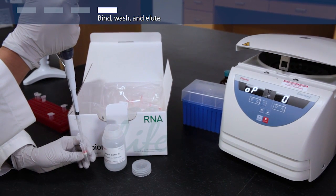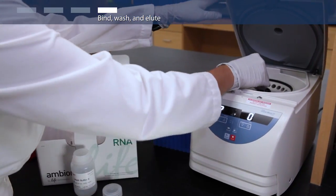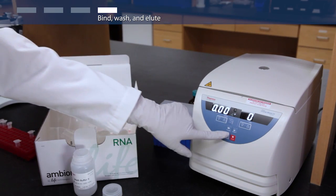add 500 microliters of prepared wash buffer 2 and centrifuge at 12,000 g for 15 seconds. Discard the flow-through and repeat.